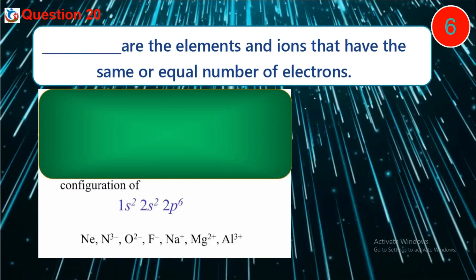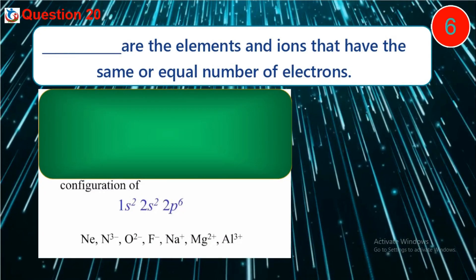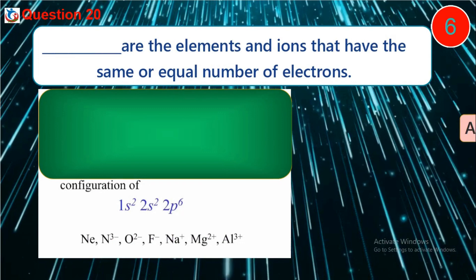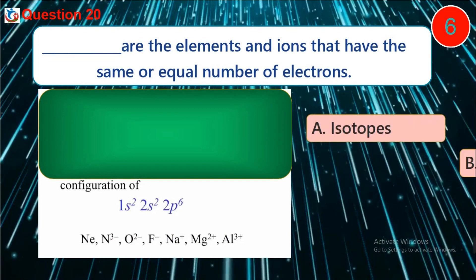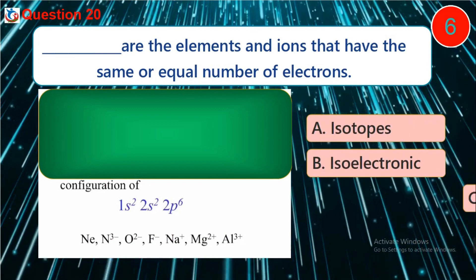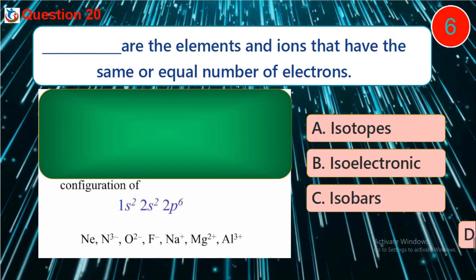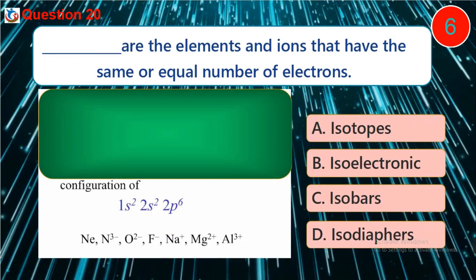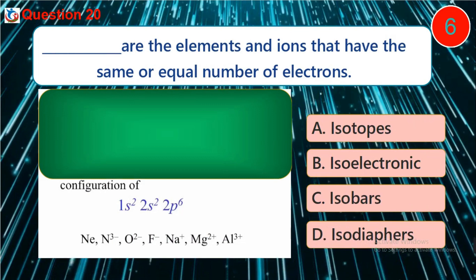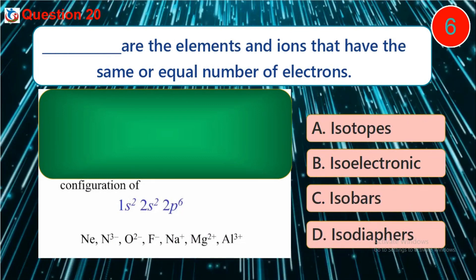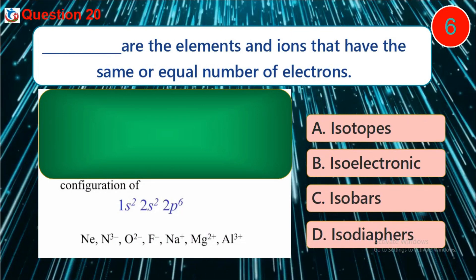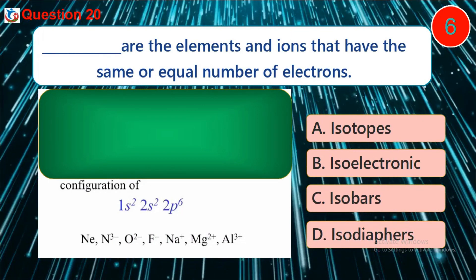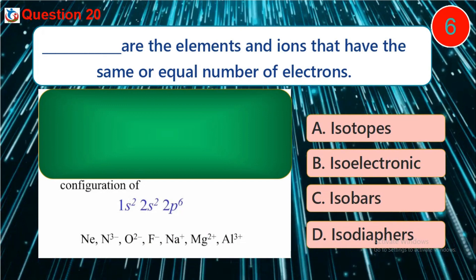Question twenty: dash are the elements and ions that have the same or equal number of electrons. A. isotopes, B. isoelectronic, C. isobars, D. isodiaphers.